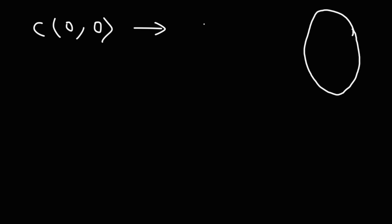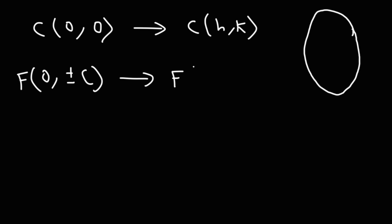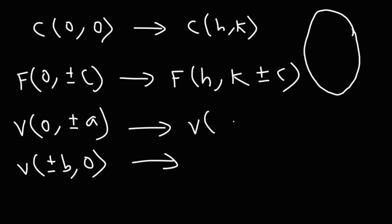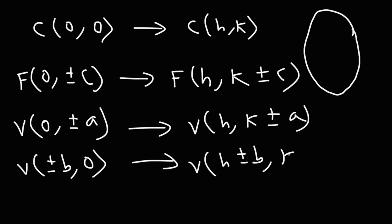Now let's consider a vertical ellipse as the center shifts from the origin to h comma k. The foci, originally at zero plus or minus c, become h comma k plus or minus c. The major vertices shift from zero plus or minus a to h comma k plus or minus a. The minor vertices shift from plus or minus b comma zero to h plus or minus b comma k.